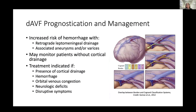For dural AV fistula prognostication, the key feature that increases hemorrhage risk is retrograde leptomeningeal drainage. These lesions may also be associated with aneurysms or varices that further increase hemorrhage risk. For patients without cortical drainage, monitoring is appropriate. However, if patients present with cortical drainage, hemorrhage, orbital venous congestion, neurodeficits, or disruptive symptoms impairing their life, those are all indications to proceed with treatment.